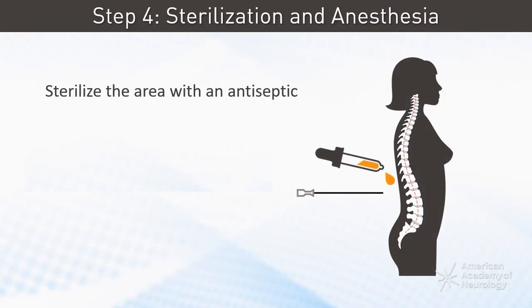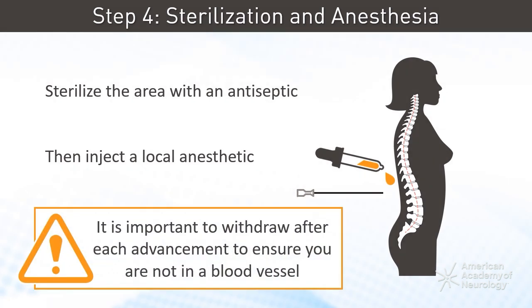Next is sterilization and anesthesia. The identified area is sterilized with an antiseptic solution. A local anesthetic is injected first into the subcutaneous layer, then into the deeper tissues down the intended path of the needle. It is important to withdraw after each advancement to ensure you are not in a blood vessel.